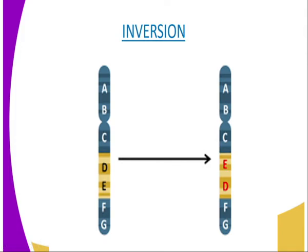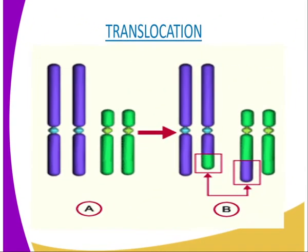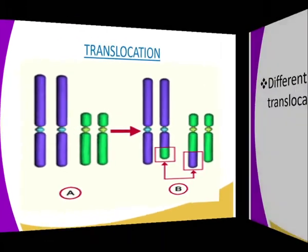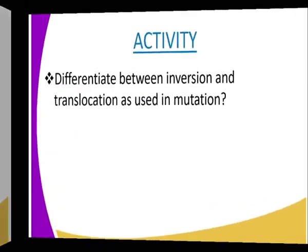The fourth type of chromosome mutation is translocation. This occurs when a section of one chromatid breaks off and becomes attached to another chromatid of the non-homologous pair, as you can see from our diagrammatic representation. Translocation therefore involves the movement of genes from one chromosome to a non-homologous chromosome.